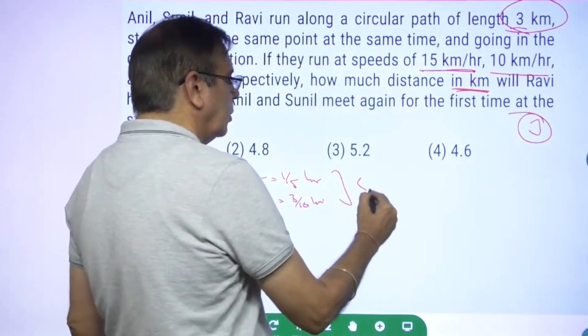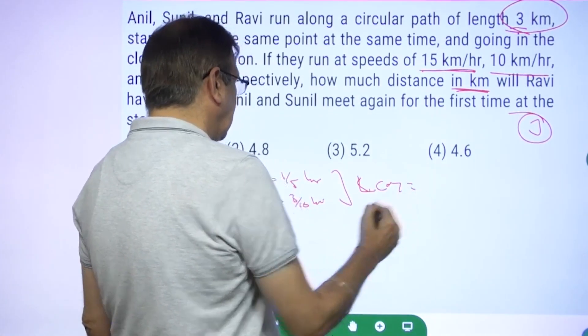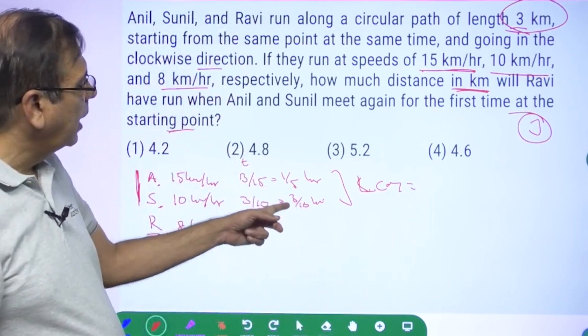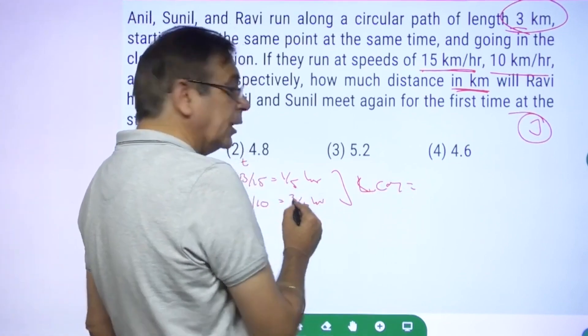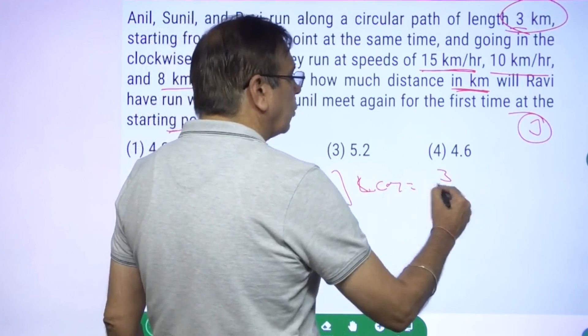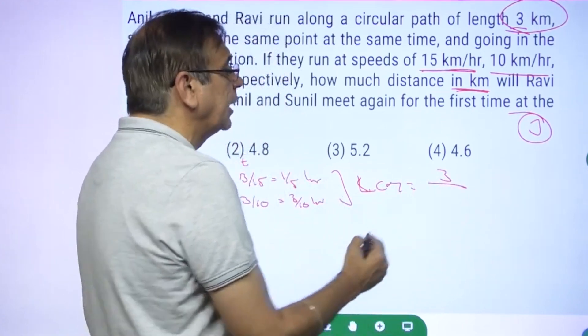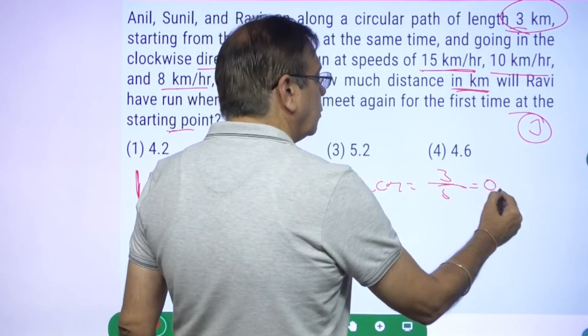What is the LCM of these two? The LCM of 1/5 and 3/10 will be LCM of the numerators (3) upon HCF of the denominators (5), which equals 3/5 = 0.6 hours.